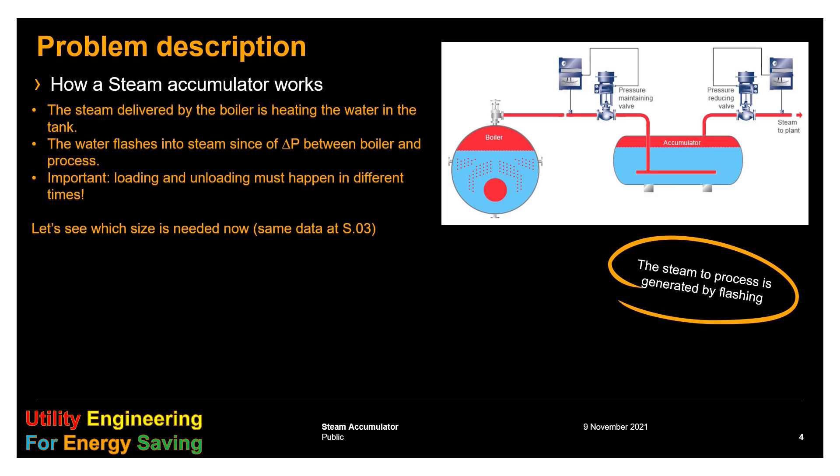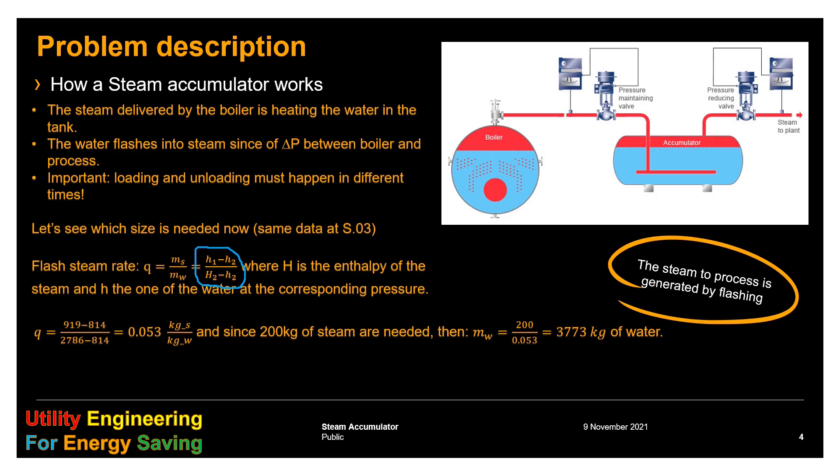Let's see which size is needed with that different construction. The flash steam rate Q is the ratio between the mass of steam and mass of water, and is the difference of the enthalpy of water at pressure 1 minus pressure 2, divided by the difference between enthalpy of steam and enthalpy of water at lower pressure, the evaporation enthalpy. If we replace the corresponding values, we get for Q a value of 0.053 kg of steam per kg of water.